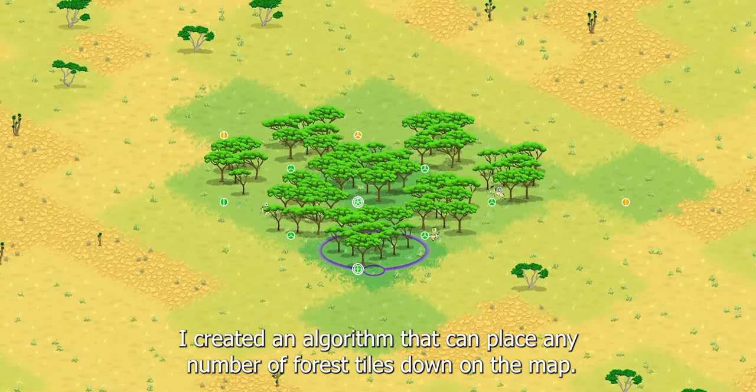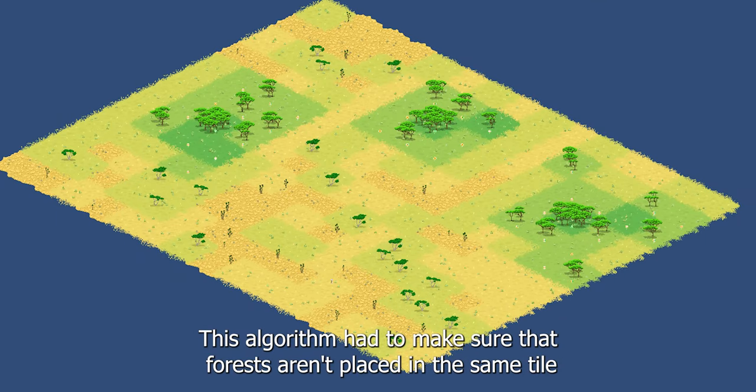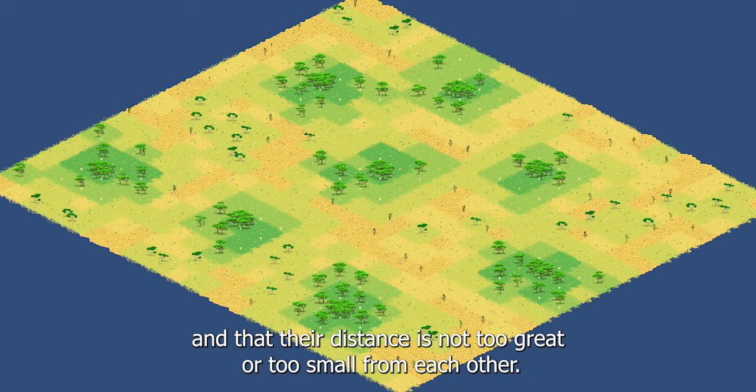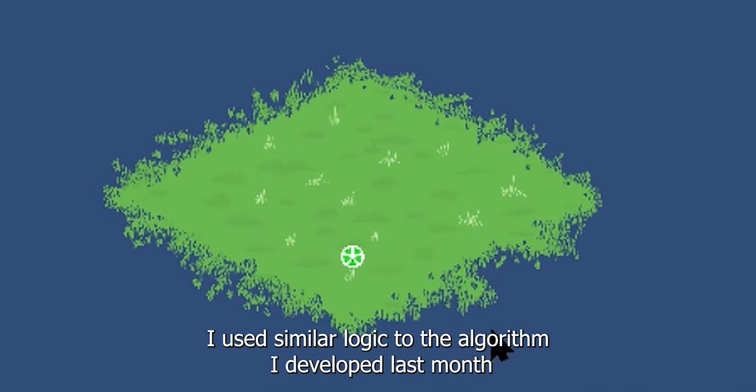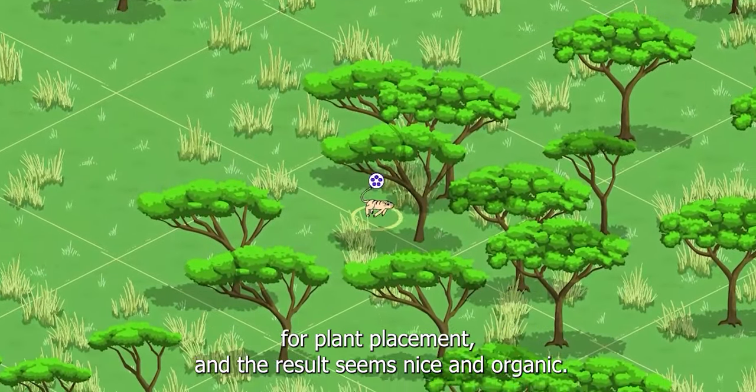I created an algorithm that can place any number of forest tiles down on the map. This algorithm had to make sure that forests aren't placed in the same tile and that their distance is not too great or too small from each other. I used similar logic to the algorithm I developed last month for plant placement and the result seems nice and organic.